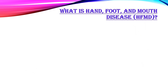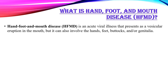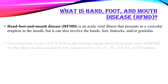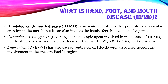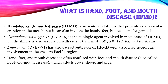Hand, foot and mouth disease is an acute viral illness. It presents as a vesicular eruption in the mouth but can also involve the hands, feet, buttocks and/or genitalia. Coxsackie virus A16 is the etiologic agent involved in most cases, but the illness is also associated with Coxsackie virus types A5, A7, A9, A10, B2 and B5 strains.